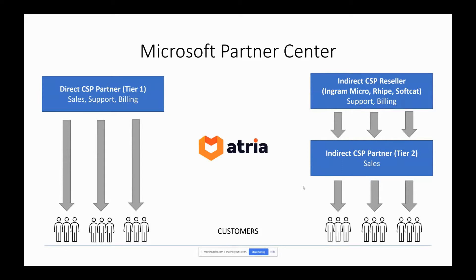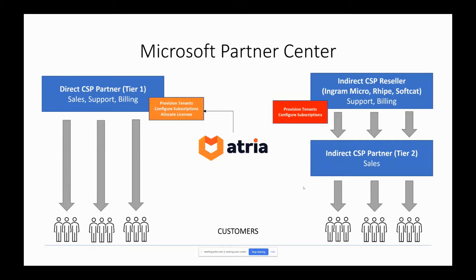For tier one partners, Atria can provision tenants, configure subscriptions, and allocate licenses. For tier two, provisioning of tenants and subscriptions needs to be done by your reseller or distributor, but we can still allocate licenses and manage users and licenses in the same way. We just cannot handle the tenant creation and subscriptions.